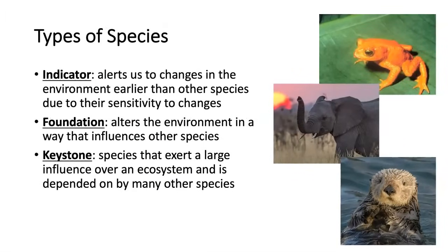For different types of species, you should know indicator, foundation, and keystone species — the three we reviewed with the campaign posters in class. Indicator species, such as frogs, are early warning systems for scientists: if we start to see decline in those populations, it tells us something is going on in the environment, often before other organisms decline, because of their sensitivity to changes. Foundation species help build or alter ecosystems — for example, elephants push over trees, create pathways through the savanna, and physically alter the ecosystem in ways that affect other organisms.